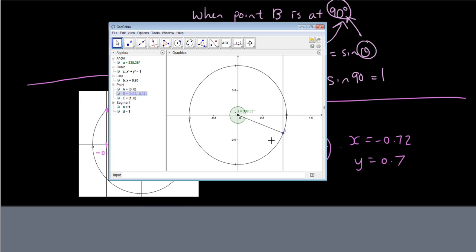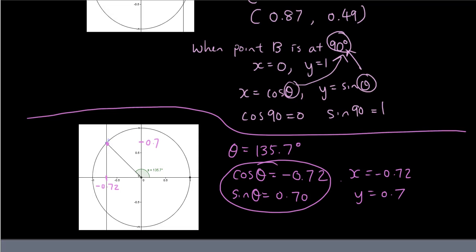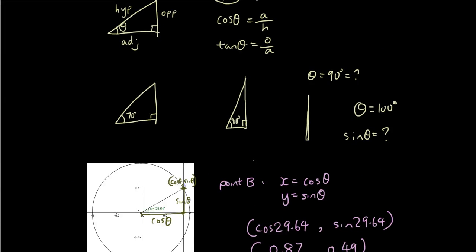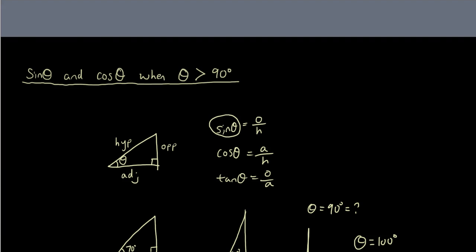Alright so hopefully from this video you guys have understood why it's possible and how to obtain values for sine and cosine when theta is bigger than 90 degrees.